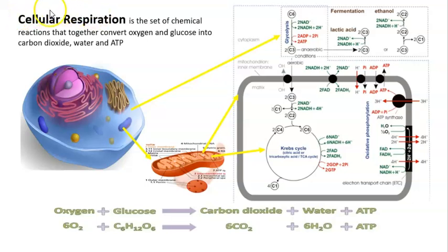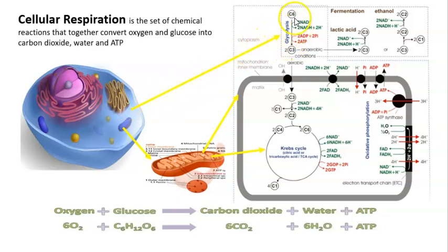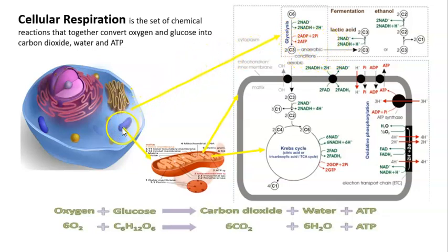Cellular respiration is a set of chemical reactions. The first chemical reaction happens in the cytoplasm and the process is called glycolysis, which is an anaerobic process. The other two steps in cellular respiration are going to happen in the mitochondria.